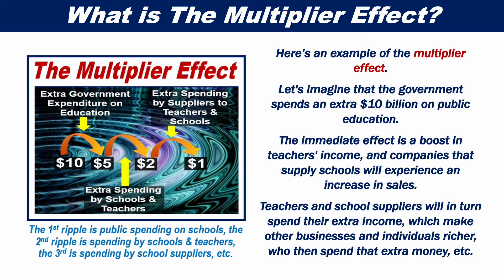Here's an example of the multiplier effect. Let's imagine that the government spent an extra $10 billion on public education. The immediate effect is a boost in teachers' income, and companies that supply schools will experience an increase in sales. Teachers and school suppliers will, in turn, spend their extra income, which makes other businesses and individuals richer, who then spend their extra money, and so on.